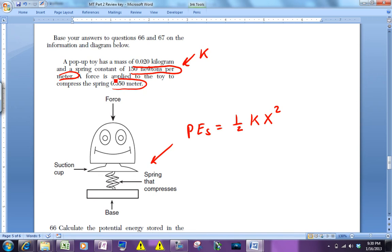This 0.05 meters is the amount that the spring is going to be, in this case compressed, or in other cases stretched. That's the distance x.